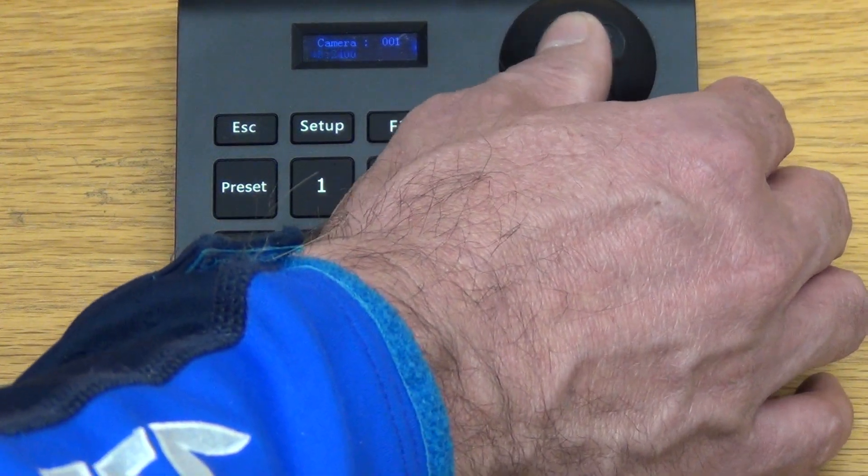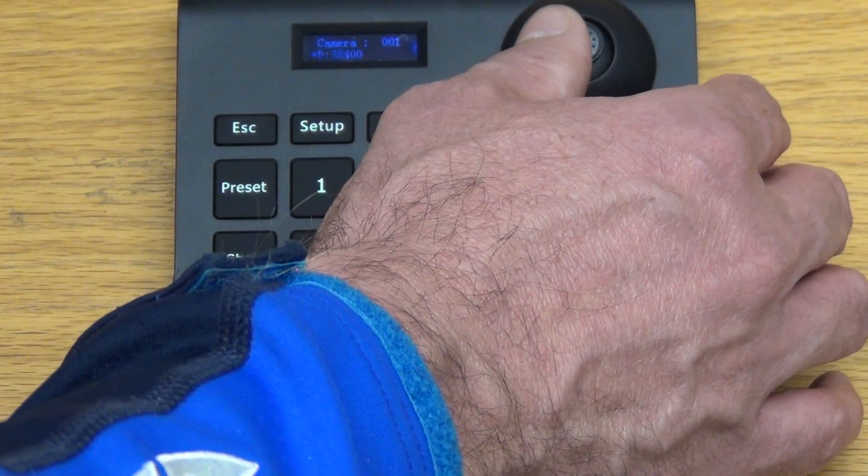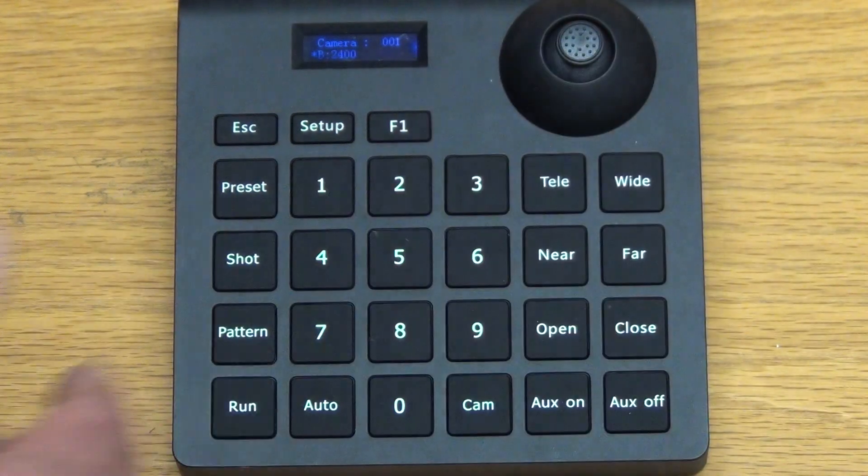So the baud rate is 2400, we've got the 4800, 19200, 38000 and back here to this.